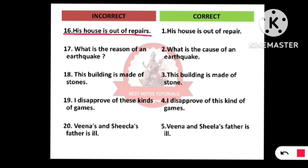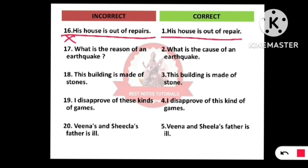Next: 'His house is out of repairs.' In this case we should use just 'repair,' not 'repairs.' The correct sentence is: 'His house is out of repair.' When we are using 'repair' as a noun — saying something is out of repair — we do not add 's.' When we say they are repairing the road, it is a verb. So instead of 'repairs,' we just use 'repair.'